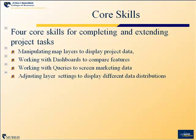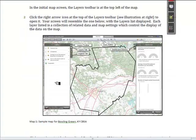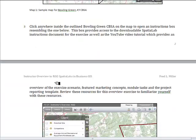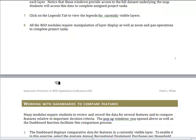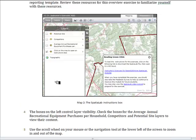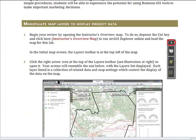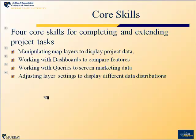In addition to the basic tasks described in every lab, there are four core skills included in this instructor overview that prepare you to complete all the tasks students do, and also to extend the labs if you wish. Those four core skills are: manipulating map layers to display project data, working with dashboards to compare features, working with queries to screen marketing data, and adjusting layer settings to display different data distributions.